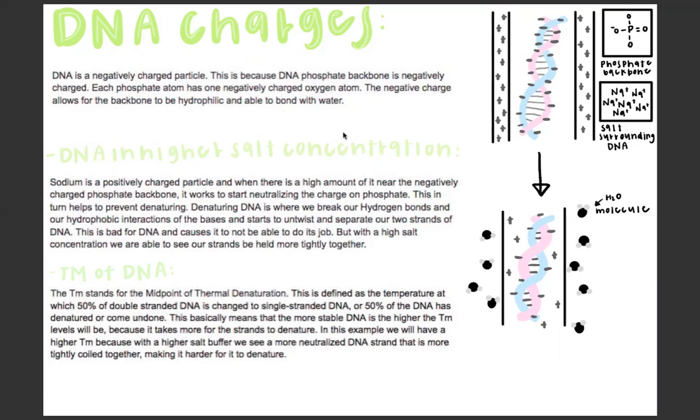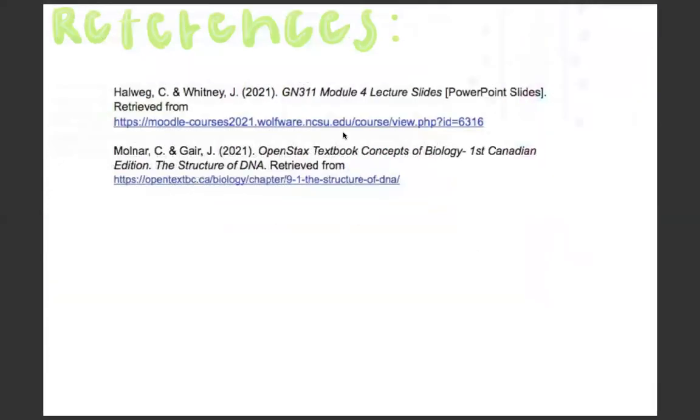The TM stands for the midpoint of thermal denaturation. This is defined as the temperature at which 50% of the double strand of DNA is changed to single strand of DNA or where 50% of the DNA has denatured and come undone. This basically means that the more stable DNA is, the higher the TM levels will be because it takes more for the strands to denature. In this example we will have a higher TM because with a higher salt buffer we will see a more neutralized DNA strand that is more tightly coiled together making it harder for it to denature.